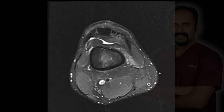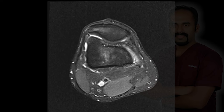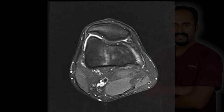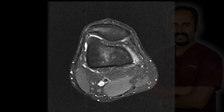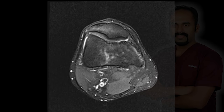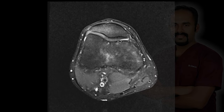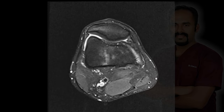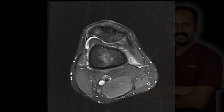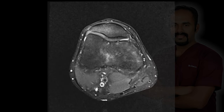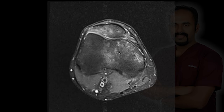Let's have a look at the patellofemoral joint on the axial PD fat-saturated images. The articular margins of the patellofemoral joint also look fairly preserved. So this is a case of partial thickness ACL tear with mild diffusion and contusion of the distal femur.